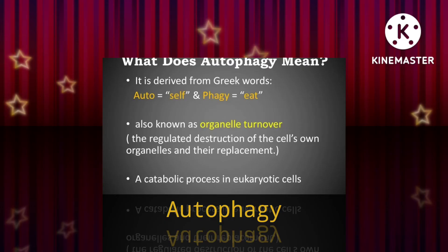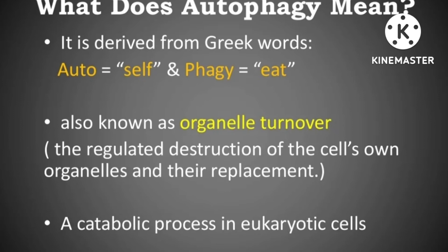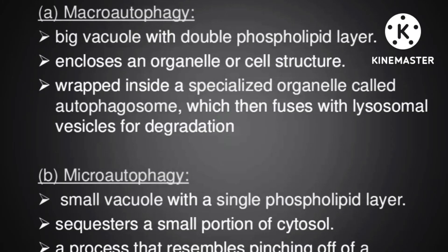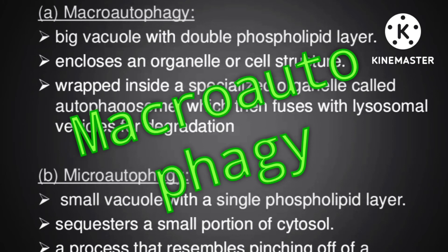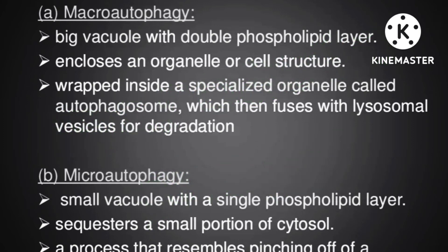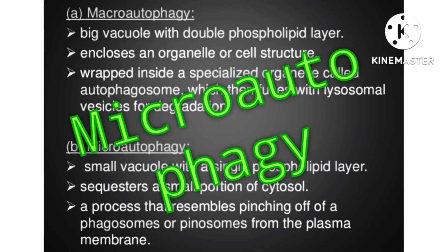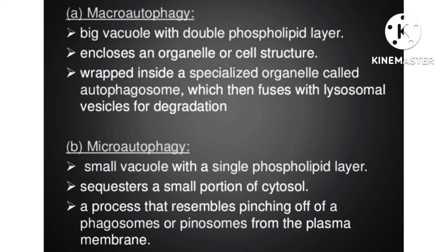Autophagy is a phenomenon in which cells digest their own parts. It is a catabolic process in eukaryotic cells derived from Greek: 'auto' means self and 'phagy' means eating. The first type is macroautophagy, where a large vesicle with a double phospholipid layer encloses an organelle or cell structure, forming an autophagosome which then fuses with a lysosome vesicle for degradation.